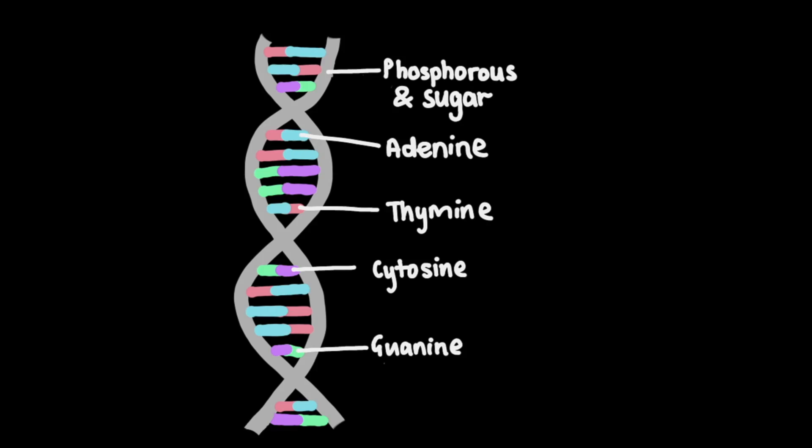DNA stands for deoxyribonucleic acid, and as seen in this diagram it forms a double helix. The backbone is made from deoxyribose sugar and phosphorus, and the ladder-like structure is formed from nitrogenous bases. These nitrogenous bases are adenine, thymine, cytosine, and guanine. Regardless of the organism, the basic structure of DNA remains the same — the only thing that changes is the sequence and length of these nitrogenous bases. This is how the creation of GMOs is possible.